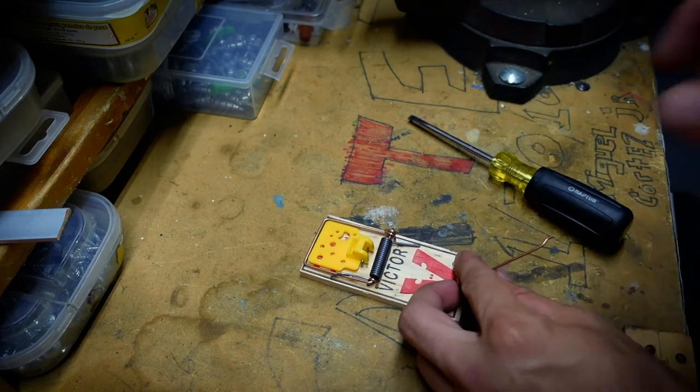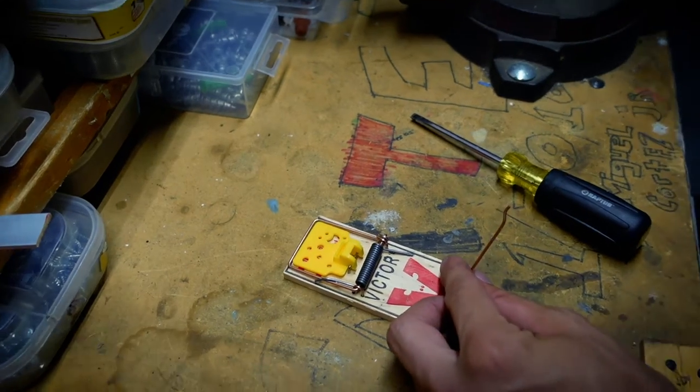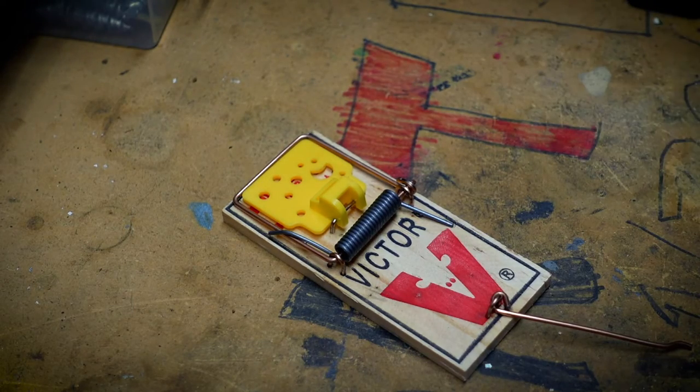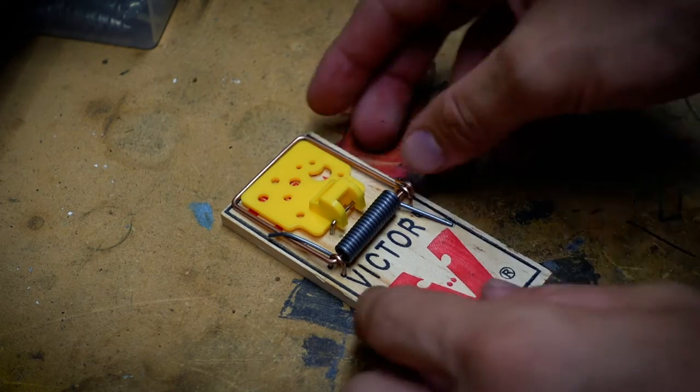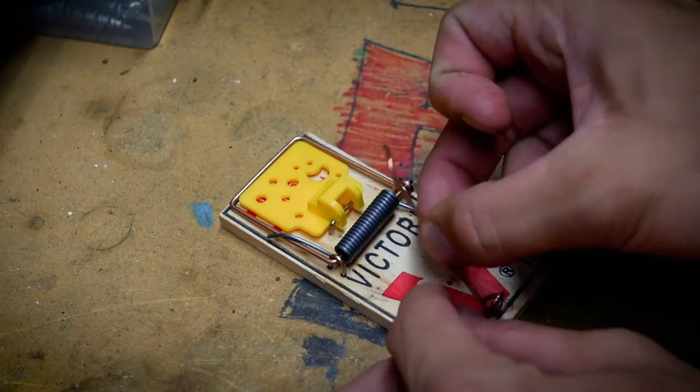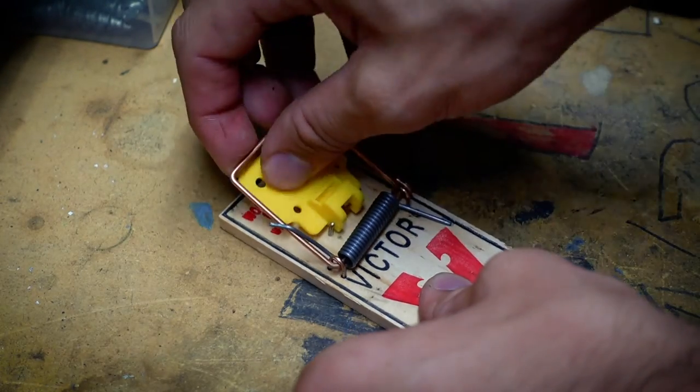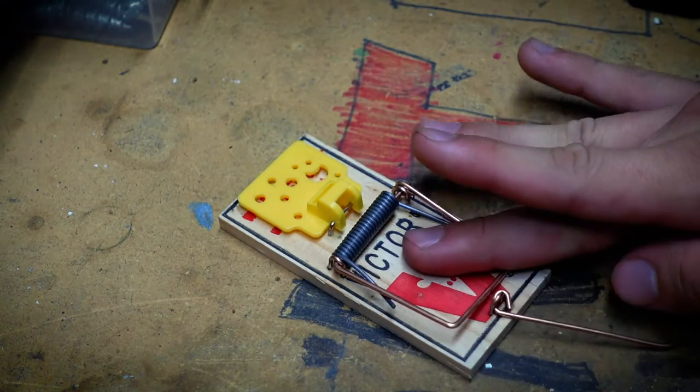The first thing you want to do, let me zoom a little bit. The first thing that you want to do is get the arm bar, bring it to the back of the trap, and then we're going to get the kill arm.